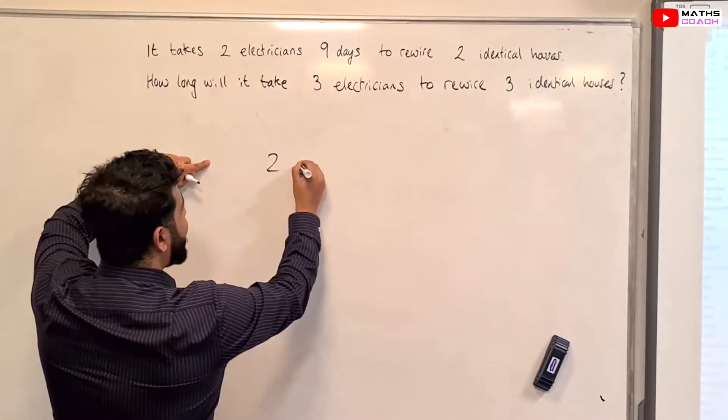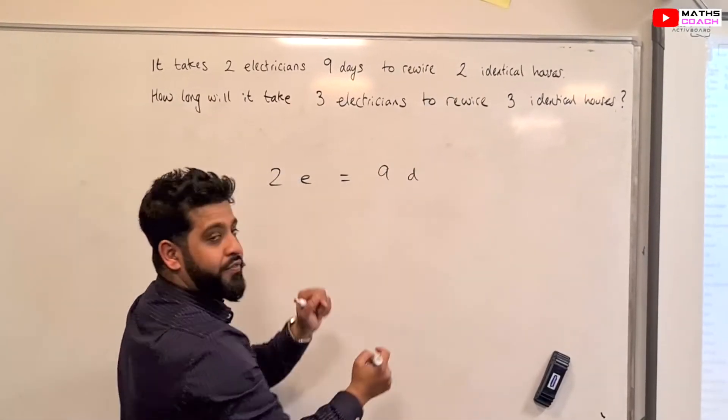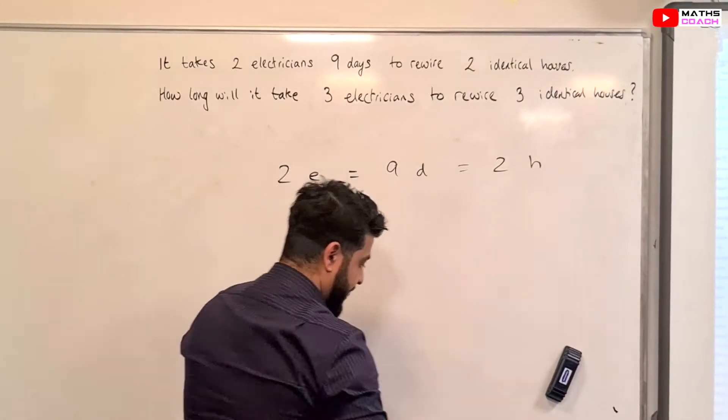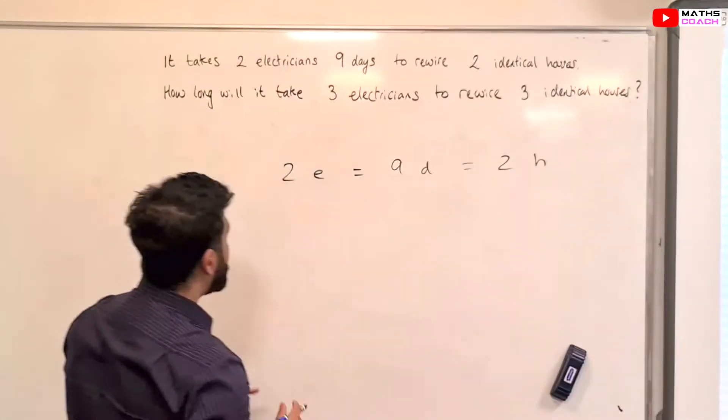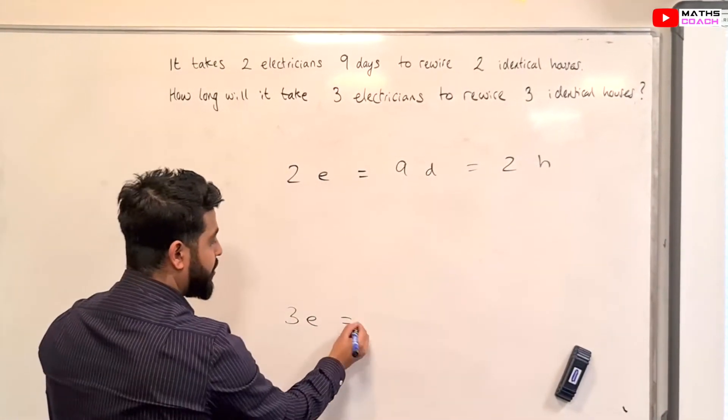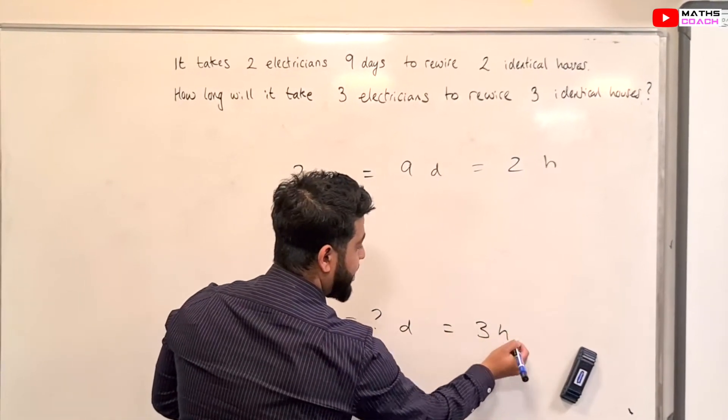So, 2e - E for electricians. It takes them 9 days, D for days, to rewire 2 houses. So, how long would it take 3 electricians, how many days, to rewire 3 houses?